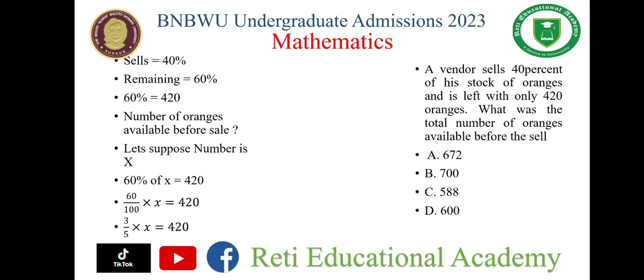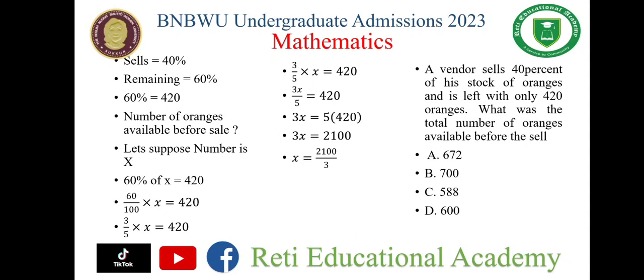Simplifying the fraction, 60 upon 100 becomes 3 upon 5, so 3 upon 5 multiplied by X equals 420. Multiplying both sides: 3X upon 5 equals 420, then moving 5 to the right side gives 3X equals 2100. Dividing both sides by 3, X equals 2100 upon 3.